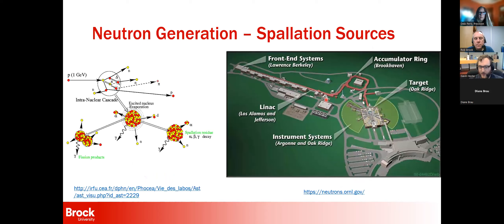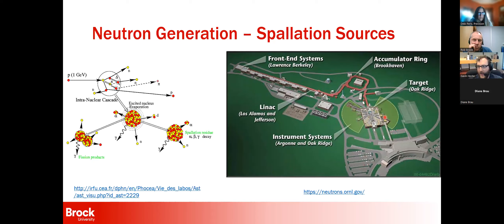The more modern way to generate neutrons is spallation. At Oak Ridge National Lab, they build a particle accelerator, accelerate protons to near the speed of light, accumulate them to get a large amount, then send them down a tube and slam them into a mercury target. Those high-energy protons make the mercury essentially explode, releasing large numbers of neutrons that are then guided to all the instruments. It takes massive government facilities to build these systems — either a nuclear reactor, which is heavily regulated, or a lot of space and money to build a spallation source.